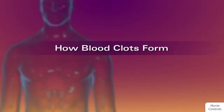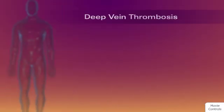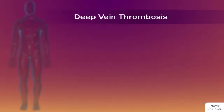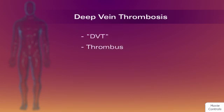How blood clots form. Deep vein thrombosis, commonly referred to as DVT, occurs when a blood clot or thrombus develops in the large and deep veins of the legs or pelvic area.